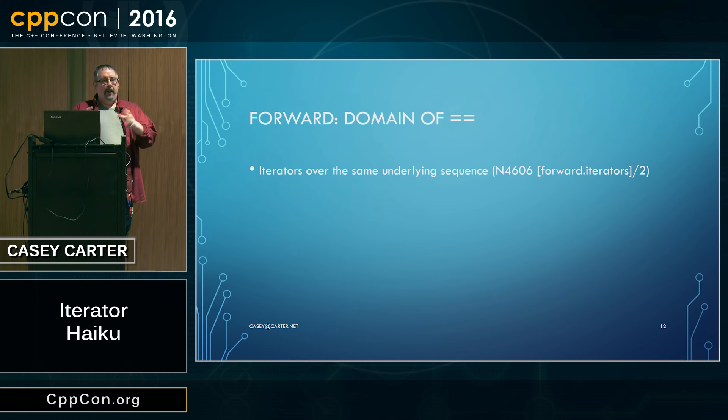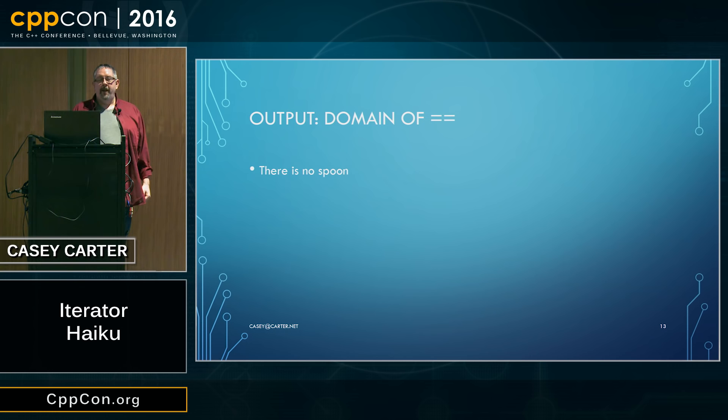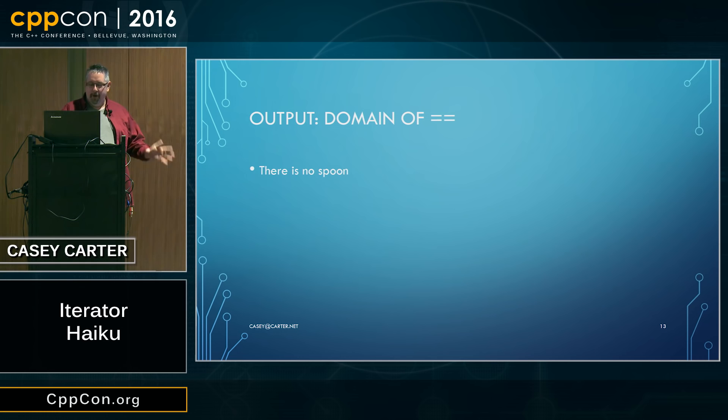Output iterators: what's the domain of equality? This is easy to answer. There is no spoon. Output iterators don't have equality comparison, so I can never compare two output iterators for equality. Which leaves input iterators as the last thing — how do I define the domain of equality for input iterators?